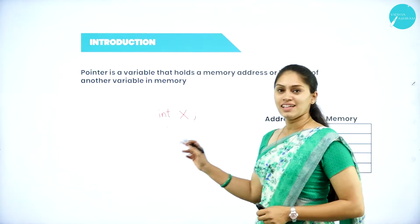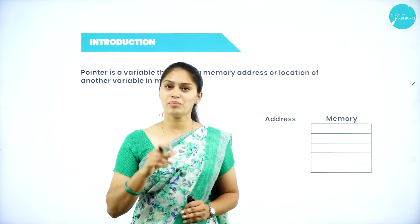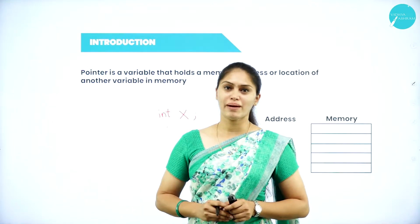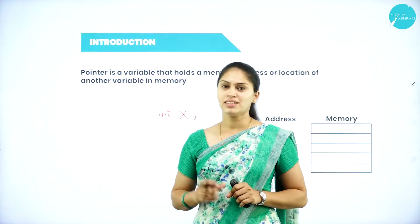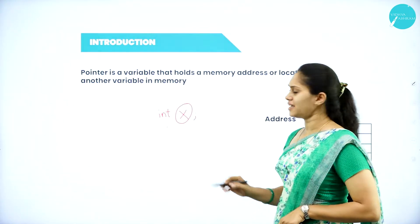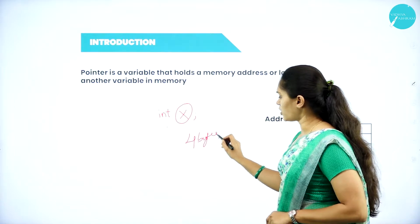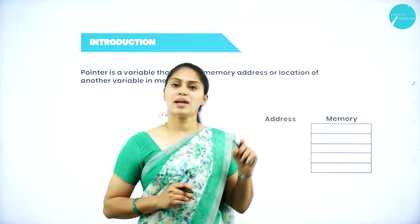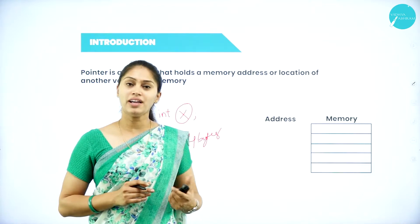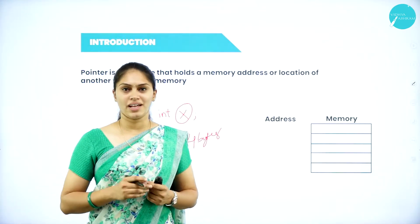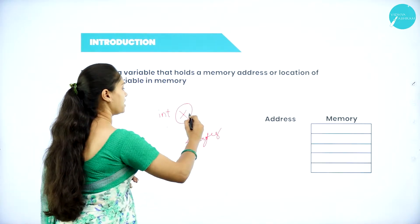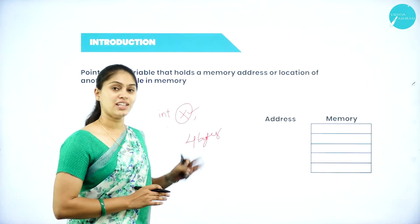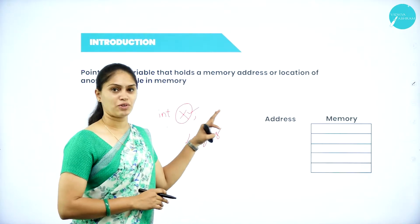When I declare this variable x, what happens in the memory location? The number of bytes allocated for the int data type is 4 bytes. So when I create this variable x, 4 bytes of memory will be allocated for it. When creating a particular data type variable, some memory location will be given to that variable. We are going to get 4 bytes of memory in the memory space.